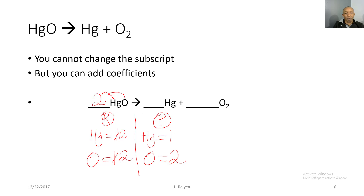When the two distributes on the product side, I cross out the old count and write the new number: two mercury and two oxygen on the product side. Now on the reactant side I put a two in front, giving two mercury and two oxygen there as well. We now have two mercury on each side and two oxygen on each side — our chemical equation is balanced. Let's take a look at another one.